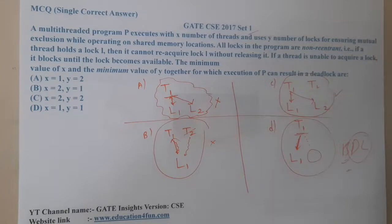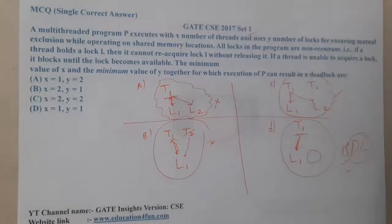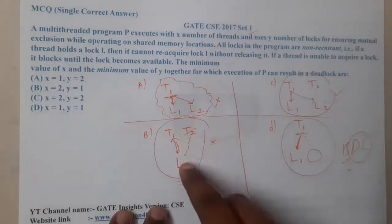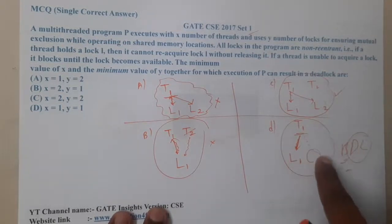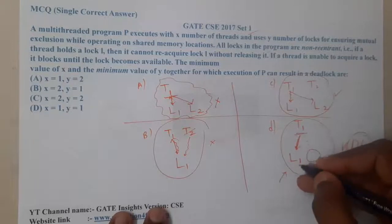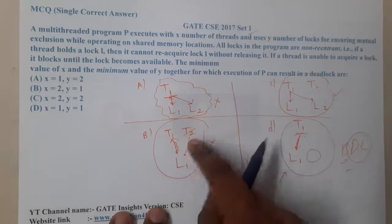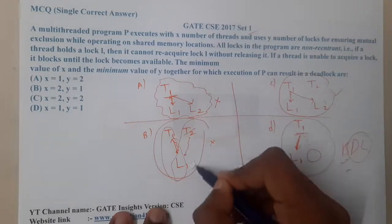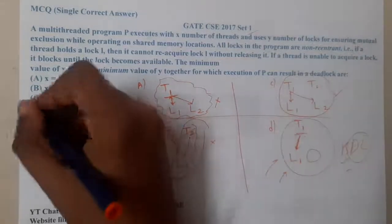The key concept here is non-reentrance. Normal reentrance means you can use the same lock multiple times, but with non-reentrant locks you are forced to use a new lock — and in Option D there is no new lock available, which leads to deadlock. In Option C, even though it has a similar setup, there are two threads, so if one thread is blocked the other can run and resolve the deadlock. Therefore the answer is D.